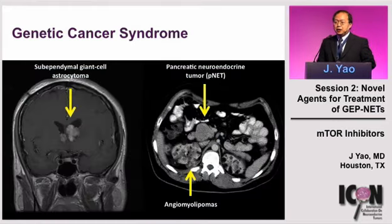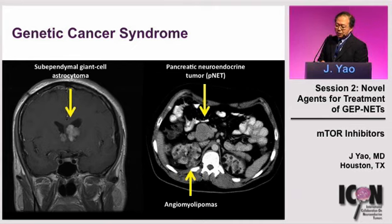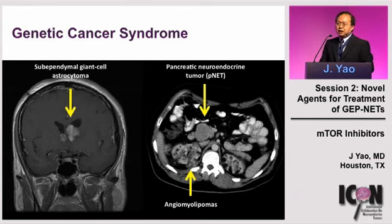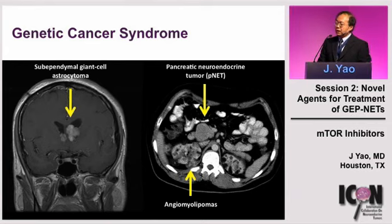We got interested in the mTOR pathway for neuroendocrine tumors because of a patient much like this one — a patient with subependymal giant cell astrocytoma, pancreatic neuroendocrine tumor, and angiomyolipoma. For those familiar with genetic cancer syndromes, this is a patient with tuberous sclerosis. The TSC1/TSC2 gene complex is our body's endogenous inhibitor of mTOR. Study of normal pancreatic islet cells shows these genes are normally intact and expressed; when the gene is mutated and not expressed, there's an increased risk of development of neuroendocrine tumors.